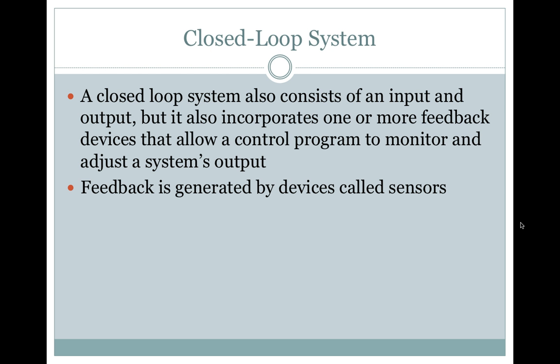A closed loop system also consists of an input and output, but it also incorporates one or more feedback devices that allow a control program to monitor and adjust a system's output. Feedback is generated by devices called sensors.